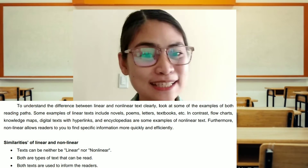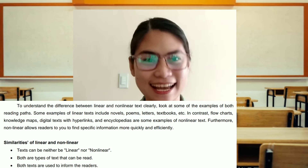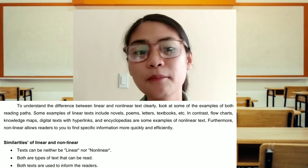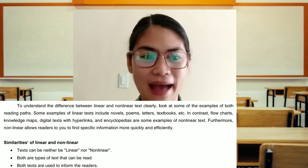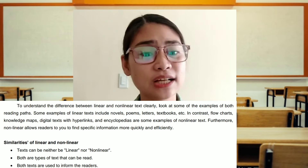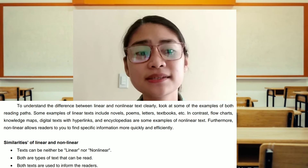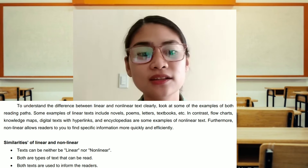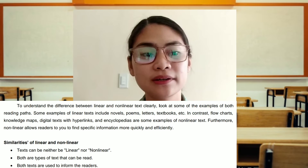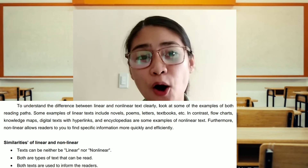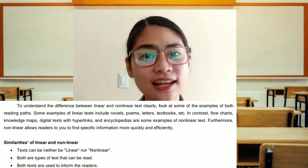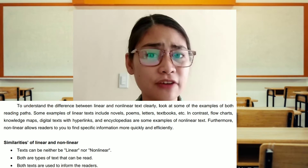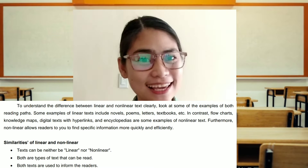And now, let's move on to the difference between Linear and Non-linear Texts. To understand the difference clearly, look at some examples of both. Some examples of Linear Texts include novels, poems, letters, and textbooks. In contrast, flow charts, knowledge maps, digital texts with hyperlinks, and encyclopedias are some examples of Non-linear Texts. Furthermore, Non-linear Texts allows you to find specific information more quickly and efficiently.